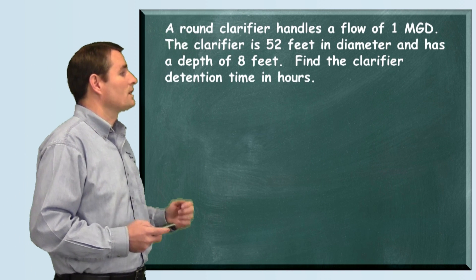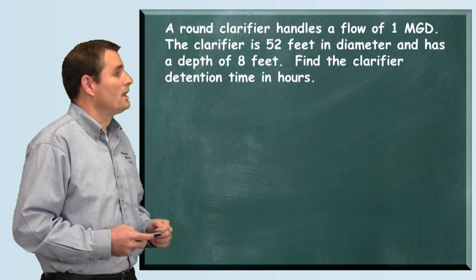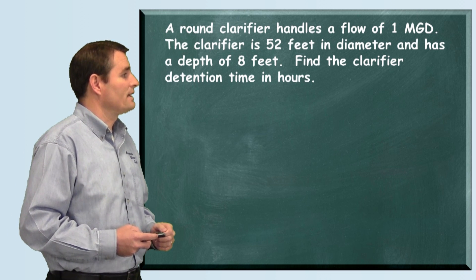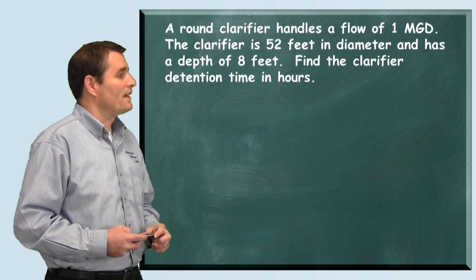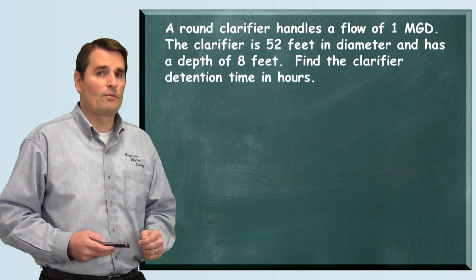This problem reads: A round clarifier handles a flow of 1 million gallons per day. The clarifier is 52 feet in diameter and has a depth of 8 feet. Find the clarifier detention time in hours.